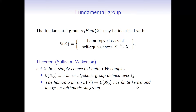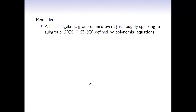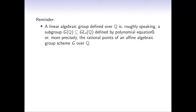This puts very severe restrictions on E(X)—for instance, it implies that E(X) is finitely generated and even finitely presented. A linear algebraic group is roughly a matrix group cut out by polynomial equations: you start with GL_N, look at certain polynomials in the matrix entries with rational coefficients, take the zero set, and if what you get is a group, that's a linear algebraic group. More precisely, it is the rational points of an affine algebraic group scheme defined over Q.